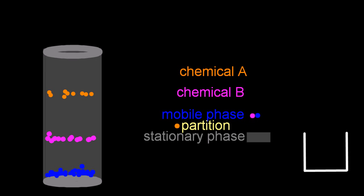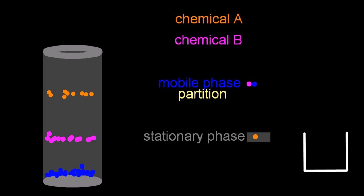It appears that chemical B prefers to be in the mobile phase because it went down the column with the mobile phase further. And chemical A seems to prefer being on the stationary phase because it stuck there, it bonded there for longer and thus didn't move so far down the column.